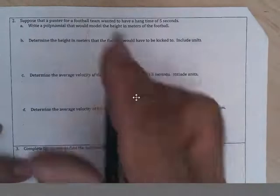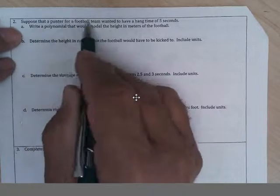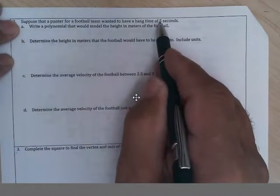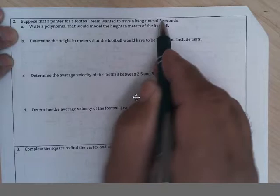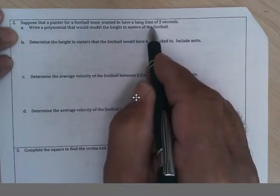Page two of the unit two test. We've got a football punter for a football team that wants a hang time of five seconds, and we want a polynomial that would model the height in meters of the football.